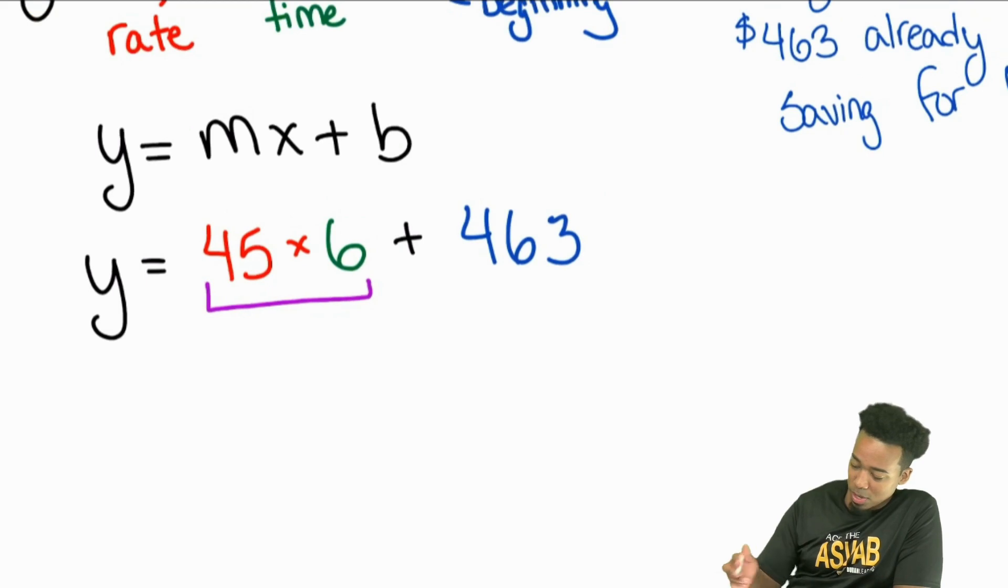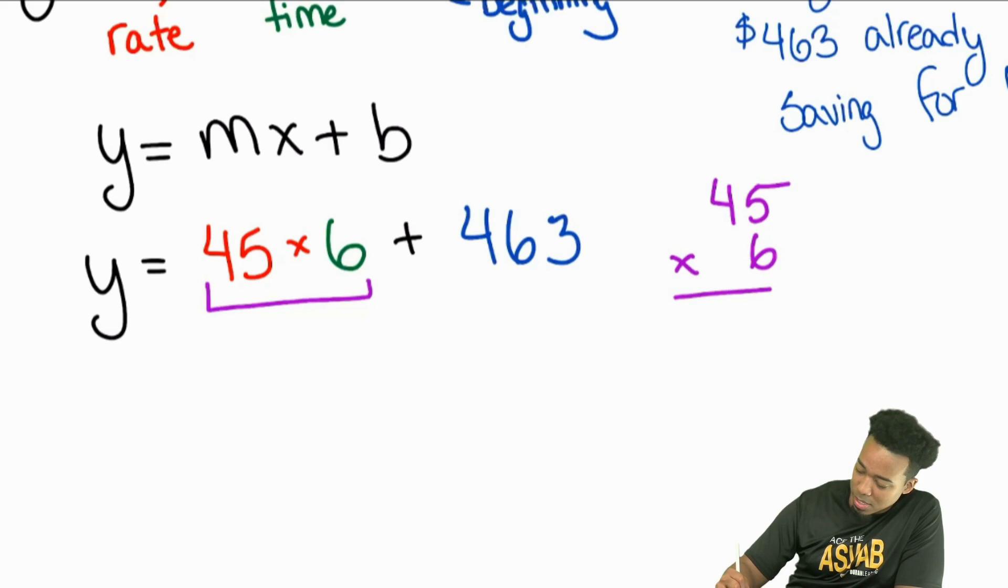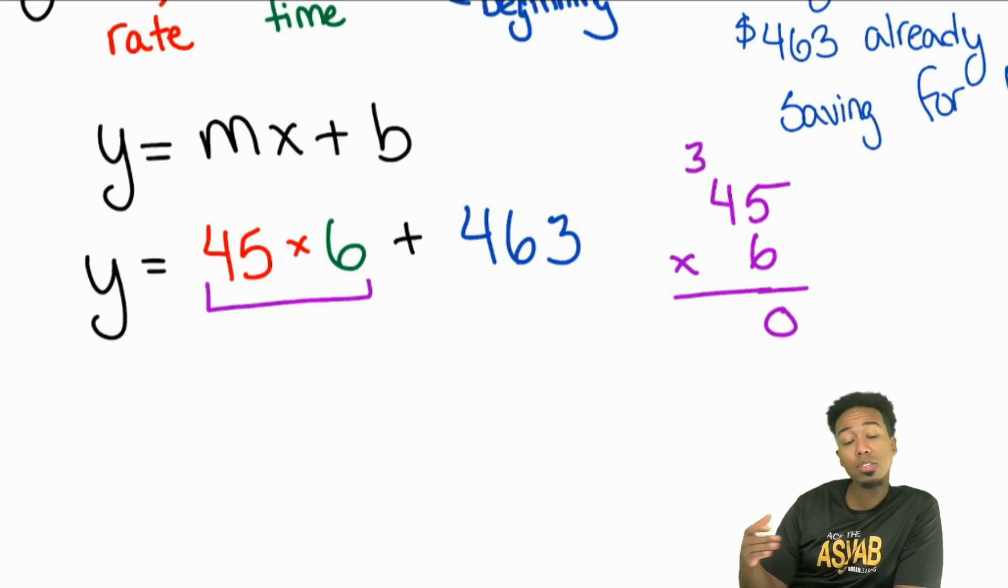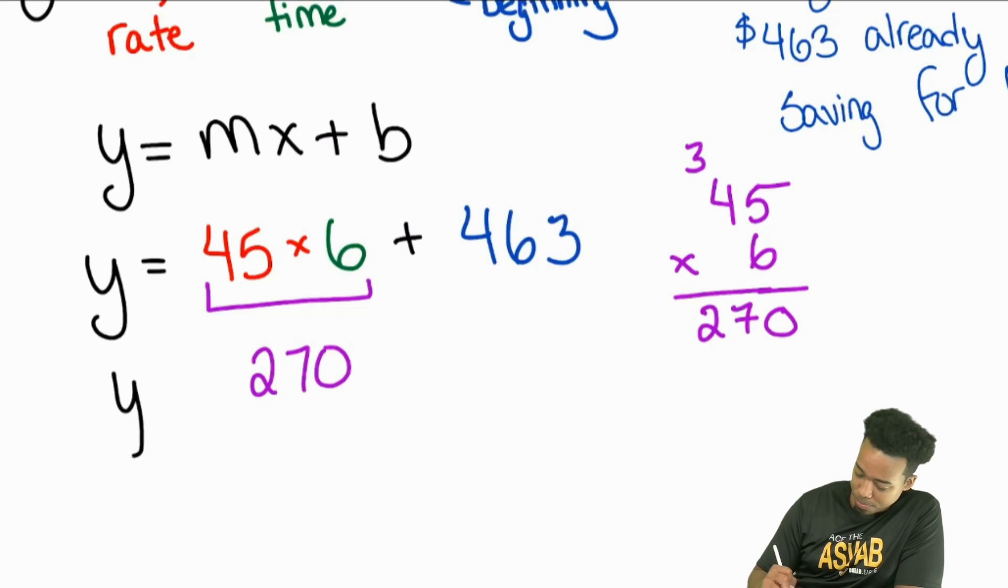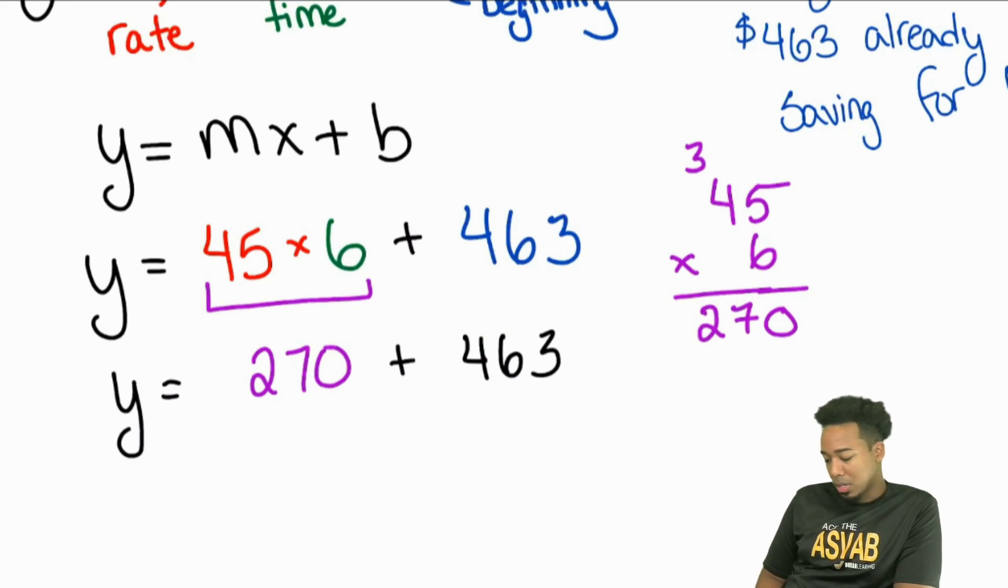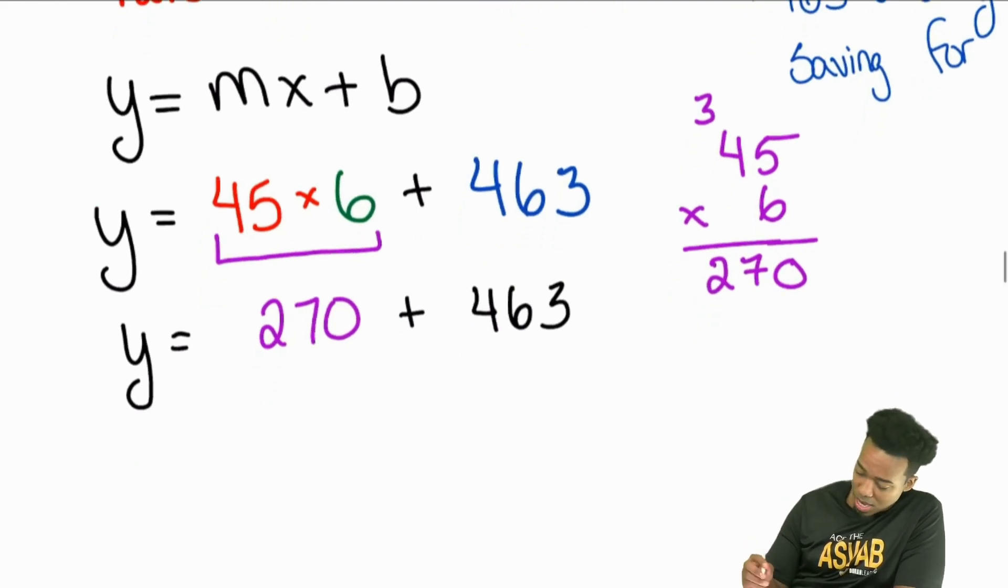So we have 45 times 6. Let's go ahead and do that first. 45 times 6. 5 times 6, that's going to give us 30. 4 times 6, that'll give us 24. Carry that 3 is 27, 47. So we have 270 coming out of that. And then we have 270 plus 463. So that'll be 663. Then that'll be 733 with some mental math. So if we do the math right there, if we add that up, that should be Y equals 733 dollars. That's how much this gaming system costs.